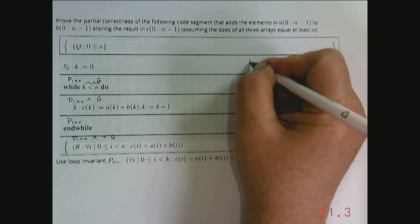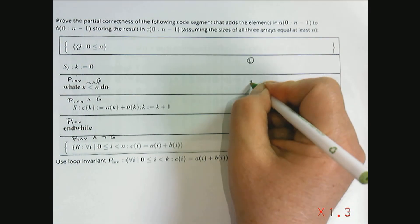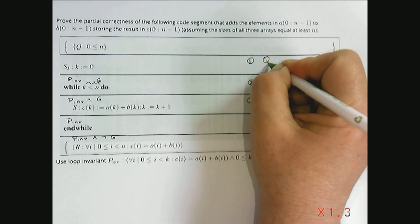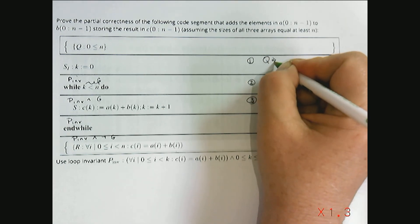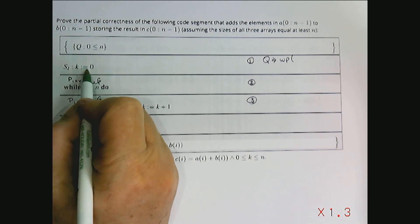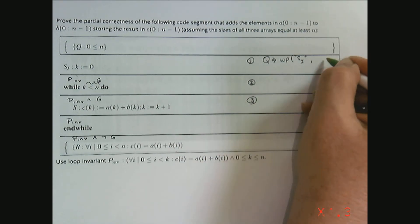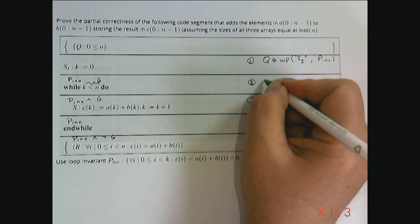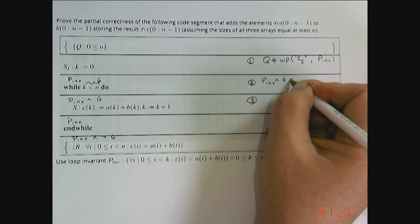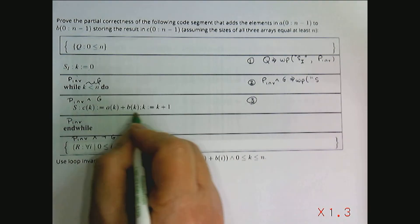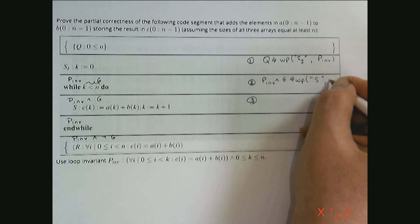So, we need to prove three predicates in order to show partial correctness. We need to show that the precondition implies the weakest precondition of the command that is our initialization, the invariant. And then we need to show that the invariant and the guard imply the weakest precondition of the command in the loop, the invariant.